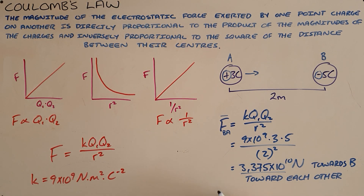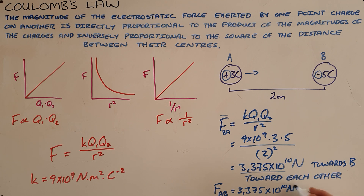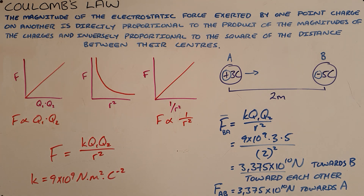Similarly, if asked to calculate the force that A exerts on B, it would be the same magnitude by Newton's third law — 3.375 times ten to the ten Newtons — except that now that force would be towards A. It's important to pay attention to how the question is asked.